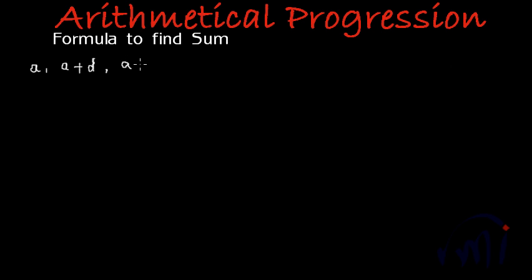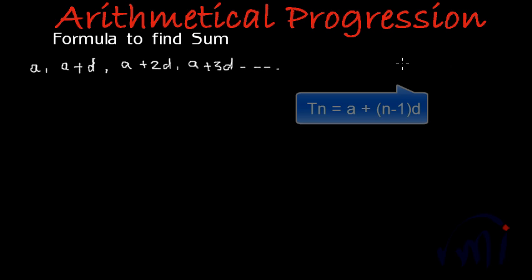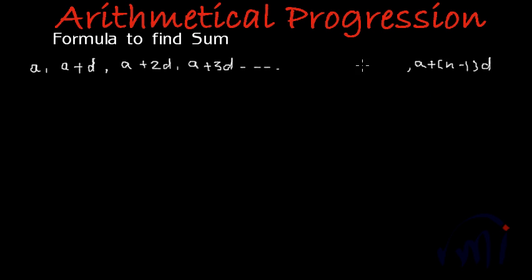The third term will be written as second term plus D, that will be A plus 2D. The fourth term will be A plus 3D, and this will continue till the nth term which will be A plus (N minus 1)D. The (N minus 1)th term will be A plus (N minus 2)D. So this is a series with N terms.